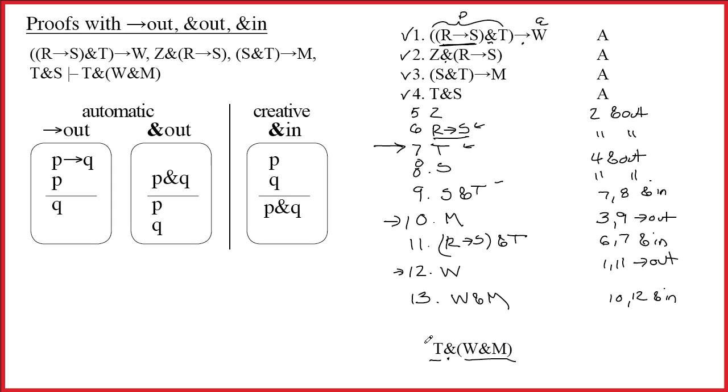And now that I have the W and M on 14, I'm going to say, well, I'm going to use 13 and I'm also going to use 7. That's the two halves of this line. So 7, 13 ampersand in. And success.